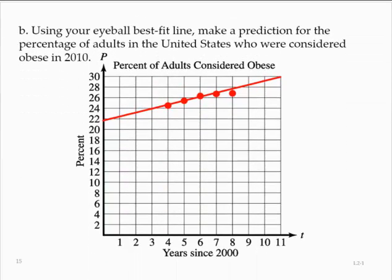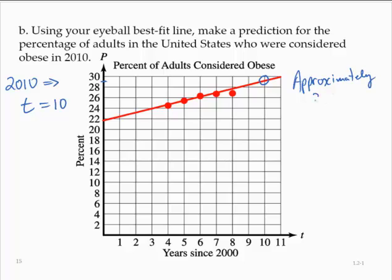Using your eyeball best fit line, make a prediction for the percentage of adults in the United States who were considered obese in 2010. For 2010, our value for t would be 10, because this is the year since 2000. So using our best fit line, that looks to be about 29%. We'll say approximately 29% of adults were obese in 2010.